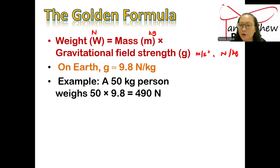For example, on Earth, the gravitational field strength is approximately equal to 9.8 newtons per kilogram. For example, let's say a 50 kilogram person. You want to find the weight, you just write down W equals mg. So the mass is 50 kilograms times 9.8, you get roughly about 490 newtons. That's the value of the weight.